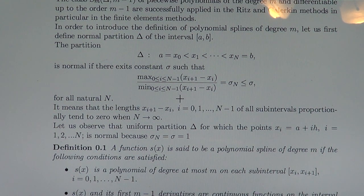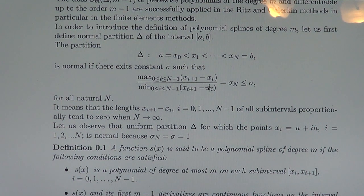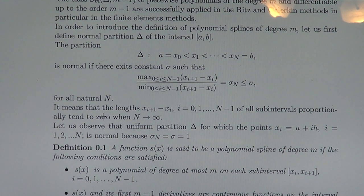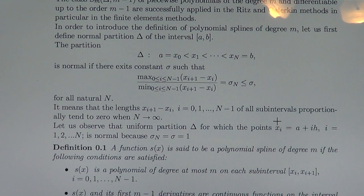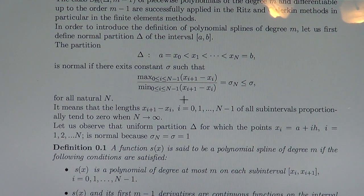It means that the points of the partition x_0, x_1, ..., x_n should be distributed everywhere — there is no gap when the number of points tends to infinity. It means that the length of the subintervals x_{i+1} minus x_i, for all subintervals, proportionally tends to 0 as n tends to infinity. If n tends to infinity, then the points are almost everywhere.